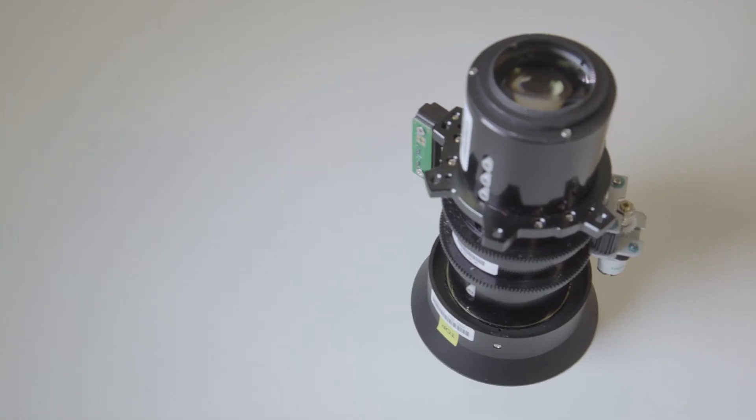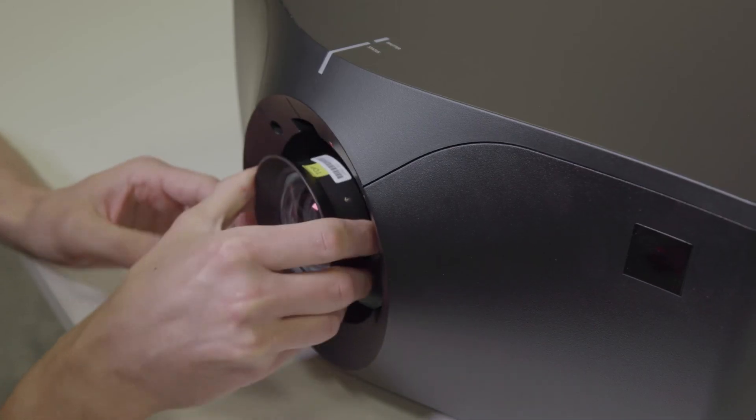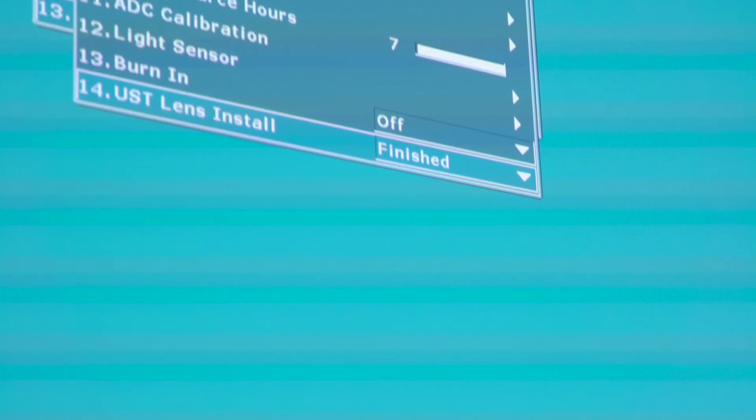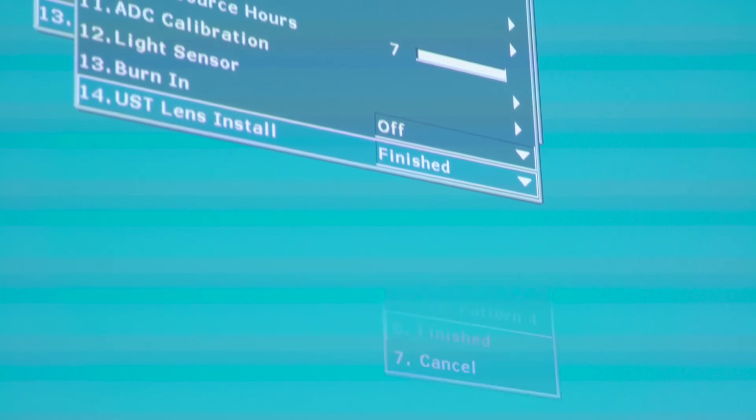Take your standard lens and install to the projector. Go to the on-screen display, select configuration, service, UST lens install, then select yes to go back to a non-UST lens mode.